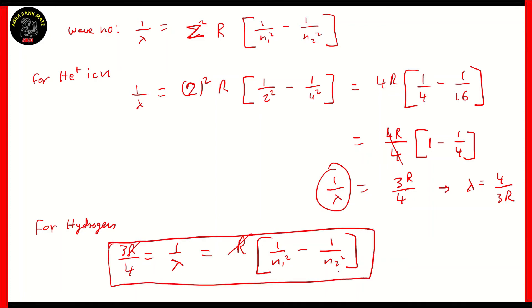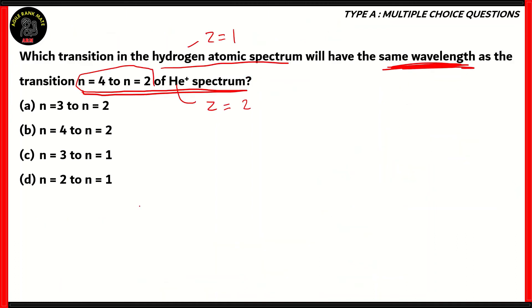We can either deduce the value of this particular relation by going backwards on our calculation and getting the answer option D, or we can check each option. Let's start with A. For A, 1 by n1 squared minus 1 by n2 squared would be equal to 1 over 2 squared, which is 4, minus 1 over 3 squared, which is 9. That gives you 9 minus 4 by 36, which is 5 by 36, so that's incorrect. What about option B, n equals 4 to n equals 2? In this case it will be 1 by 2 squared minus 1 by 4 squared, which is equal to 1 by 4 minus 1 by 16, which is equal to 3 over 16, which is incorrect. What about option C? Option C says n equals 3 to n equals 1. That will be 1 by 1 squared over 1 by 3 squared, which is basically 1 minus 1 by 9, which gives you 8 over 9.